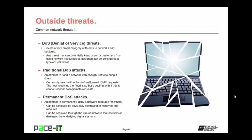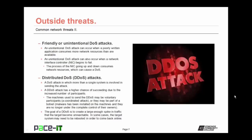Then there's the permanent DOS attack. It's an attempt to permanently deny a network resource for others. It can be achieved by physically destroying or removing the resource, or through the use of malware that corrupts or damages the underlying digital system to the point where it cannot be repaired and must be replaced. There are also friendly or unintentional denial of service attacks. An unintended DOS attack can occur when poorly written applications consume more network resources than are available. Another unintentional DOS attack can occur when a network interface controller, or NIC, begins to fail. It's quite common when a NIC is about to fail for it to go offline and come back online repeatedly and rapidly, consuming network resources.